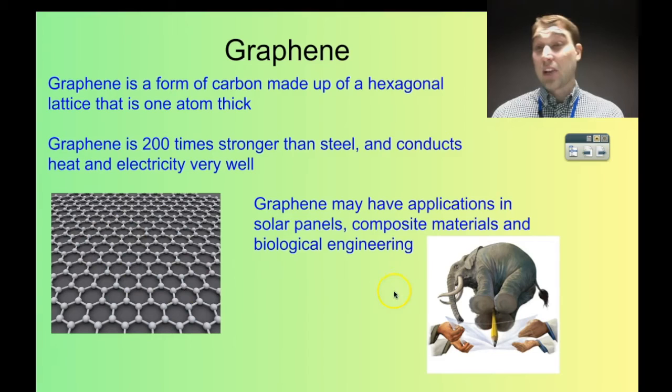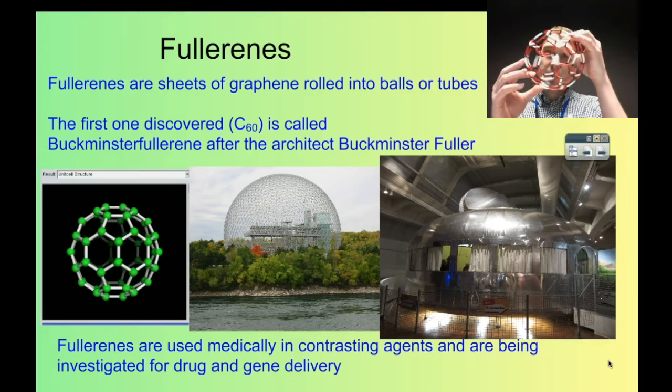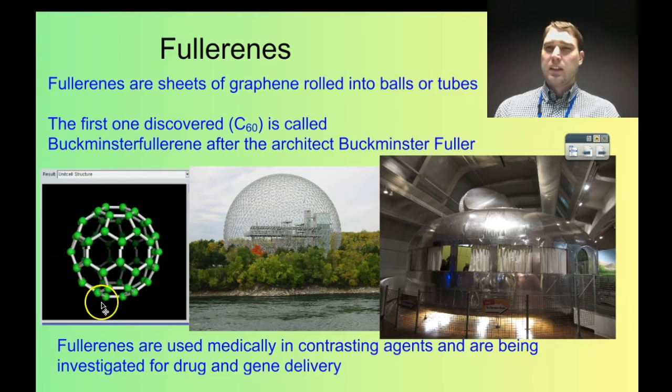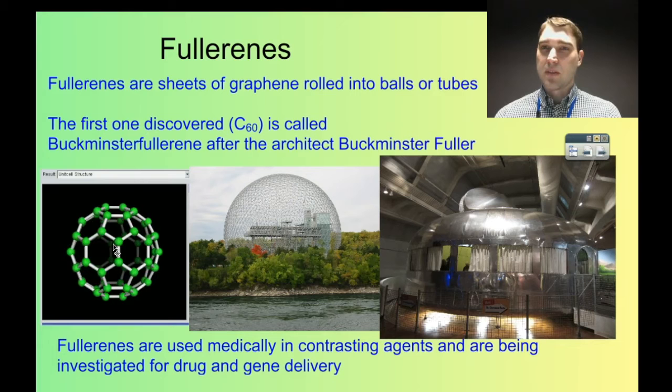One structure is called a fullerene. I have a little fullerene model here — it's where you take graphene and roll it into a ball or a tube. This is a ball, and these are usually referred to as buckyballs. The first one is carbon-60, discovered in the 1980s. It's 60 carbons, where each carbon is joined to three carbons, meaning there are electrons left over and they're conductive — so they conduct electricity.